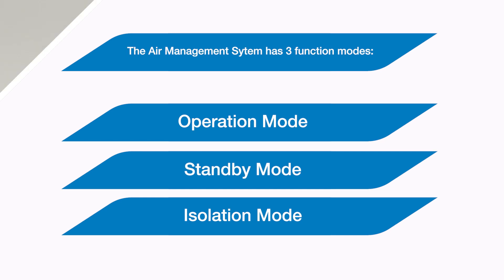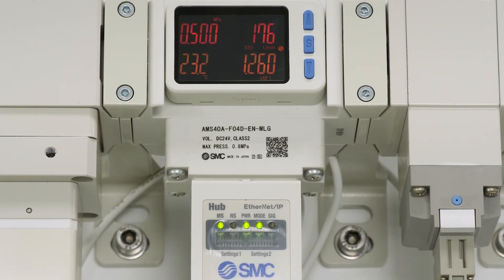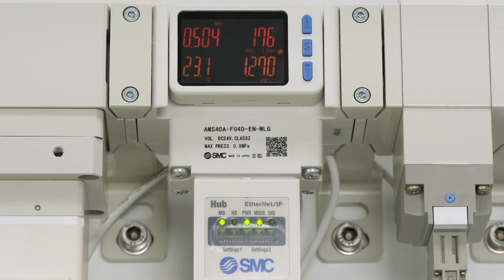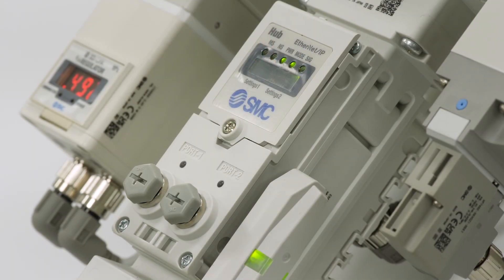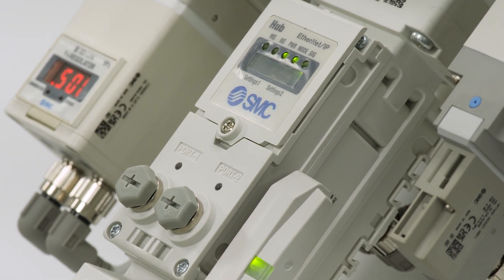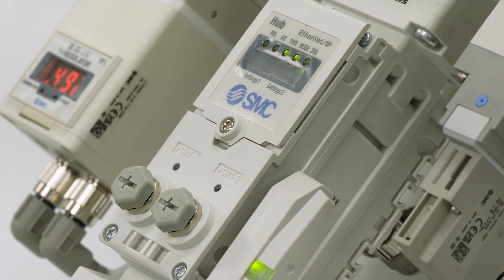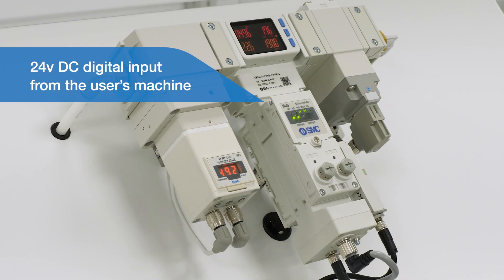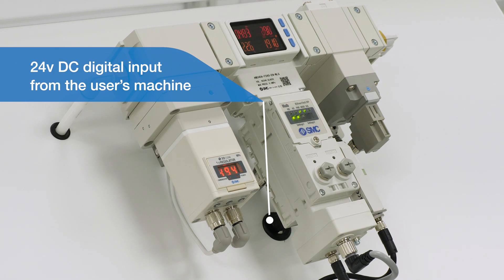The air management system needs to be configured with your specific machine requirements such as the expected standby flow rate and the lowest practical standby pressure. Also a 24 volt DC digital input or logic high from a contact on the machine such as a PLC output or relay is required to be wired into the unit. These will become clearer later in this video.